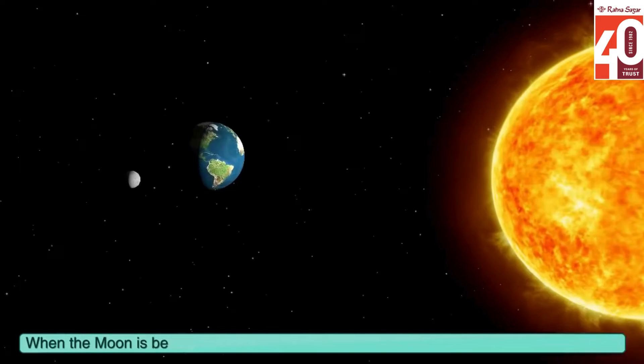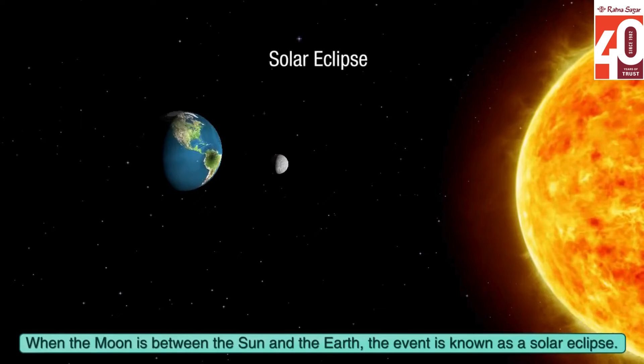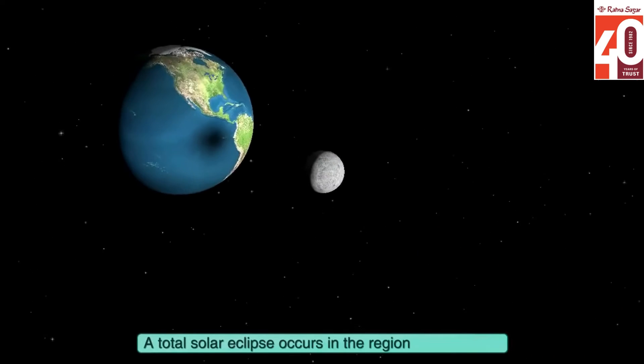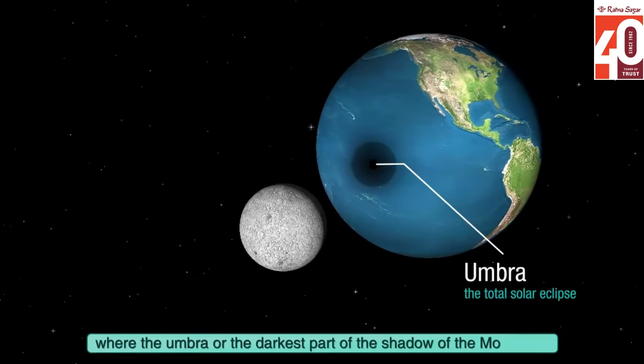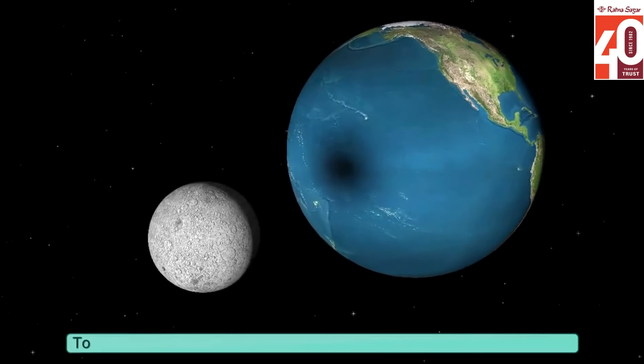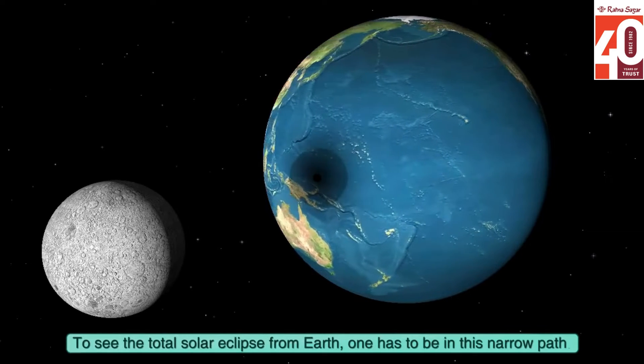When the moon is between the sun and the Earth, the event is known as a solar eclipse. A total solar eclipse occurs in the regions of the Earth where the umbra, or the darkest part of the shadow of the moon, falls. To see the total solar eclipse from Earth, one has to be in this narrow path.